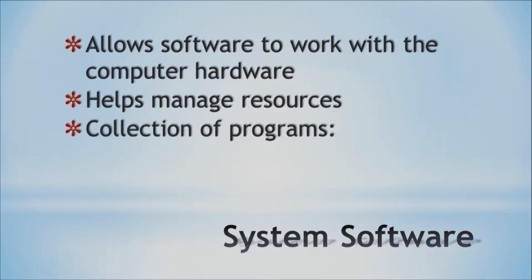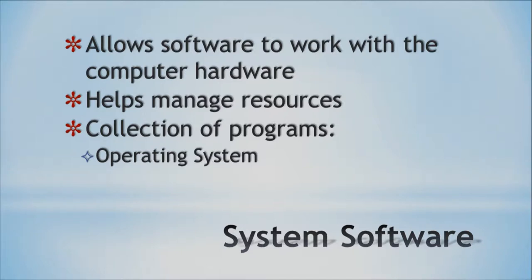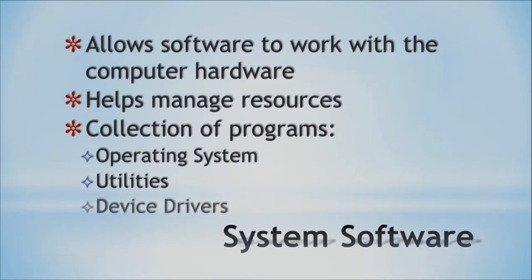The system software is actually a collection of different programs. The most important one to start with is your operating system — this is the main part of the system software. You also have different utilities that help configure, maintain, and run your computer. And finally, another very important part is your device drivers, which allow the hardware to communicate with your operating system. So all three of these items together make up your system software.